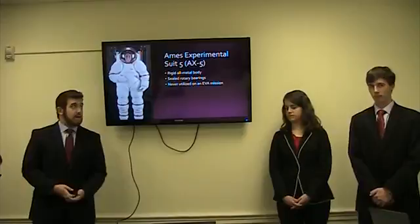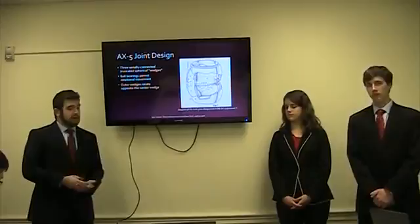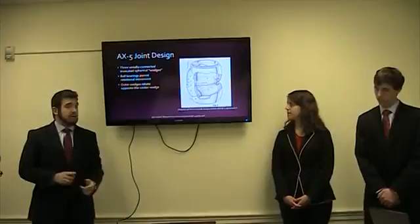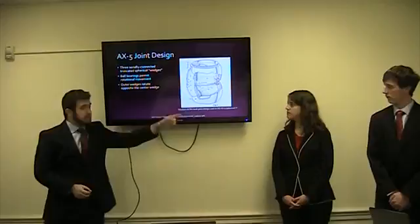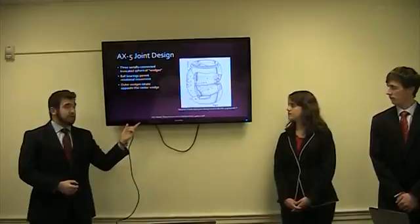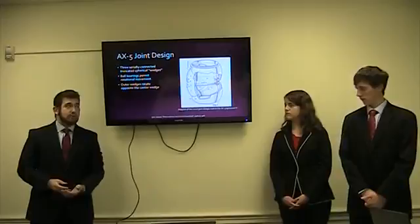However, due to its incredibly high stowage volume and weight, the AX-5 has never actually been utilized on an EVA mission. The most important part of the AX-5 is the joint design. As shown on the diagram, the joints consist of three spherical wedges designed to rotate around each other, with the two outer wedges rotating in the same direction while the inner wedge rotates in the opposite direction. When the shorter edges are all lined up, this constitutes a 120-degree bent motion. In the short-long-short orientation, this produces a fully straight arm, allowing the joint to achieve a variety of different motions.